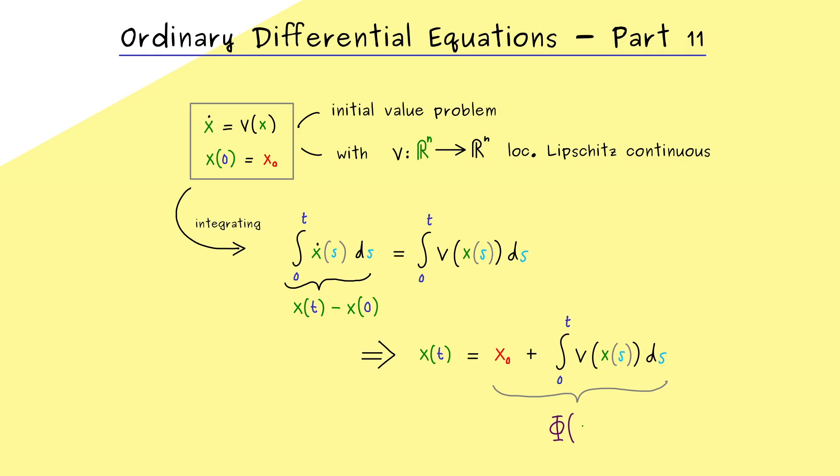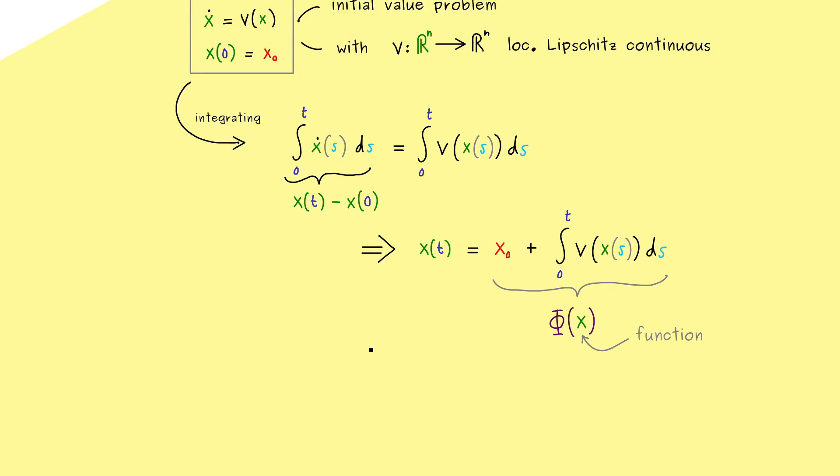And the input for this map phi is a function x. In other words, it gets a function x and the function x comes out again. Indeed, this is the crucial thing here to note. We have to put in a function and we get a function out again. So it's a more complicated map. So let's write down a definition for it.